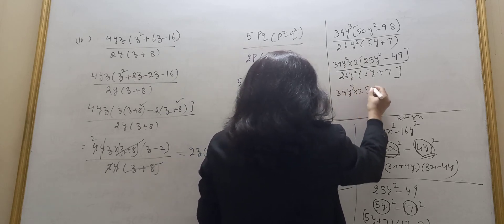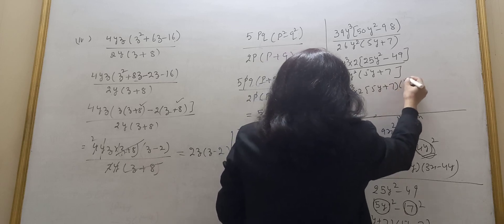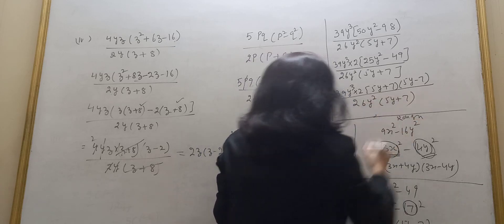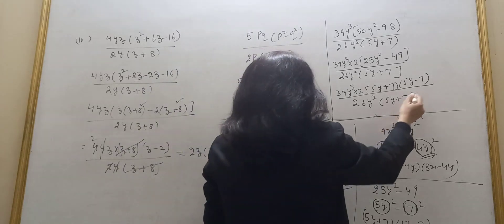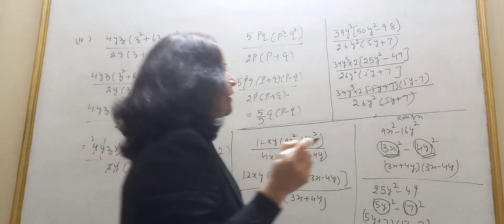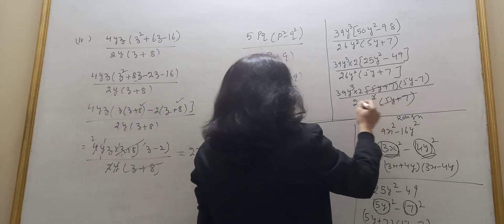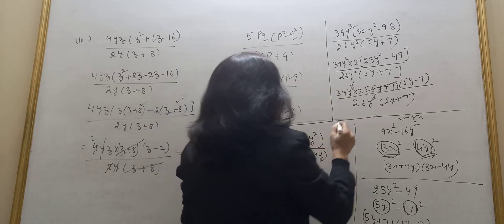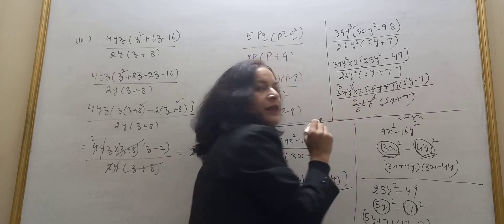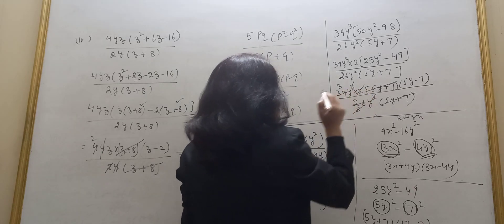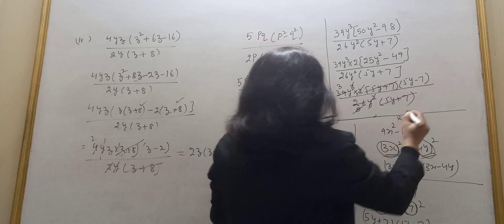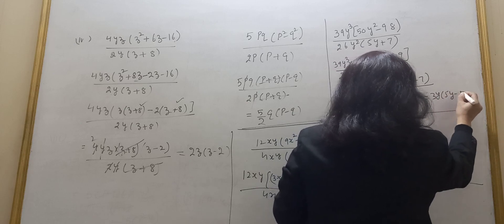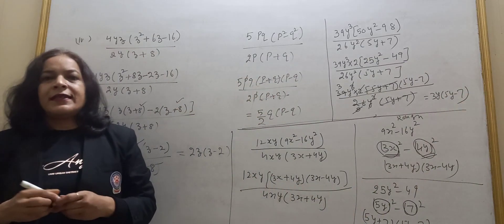So writing the full expression: 39Y cubed into 2 into 5Y plus 7 into 5Y minus 7, divided by 26Y squared into 5Y plus 7. Now 5Y plus 7 cancels with 5Y plus 7. Y squared in denominator and Y cubed in numerator: Y cubed minus Y squared gives Y to the power 1, so only Y remains. Then 26 and 2 into 39: 2 goes with 26 leaving 13, and 39 divided by 13 is 3. Your answer is 3Y into 5Y minus 7.